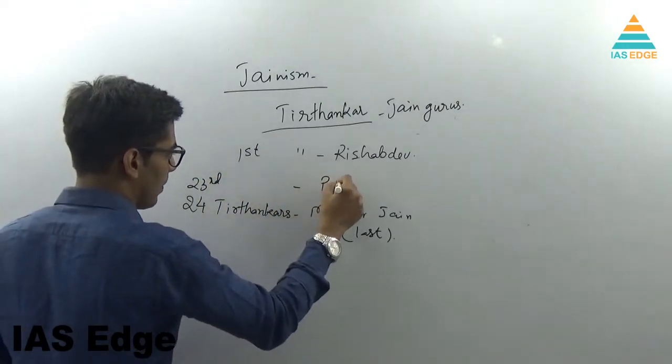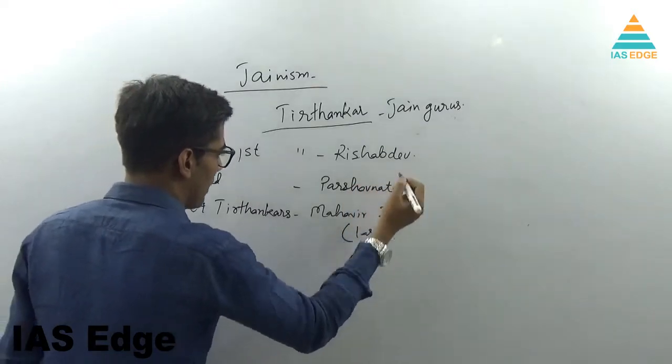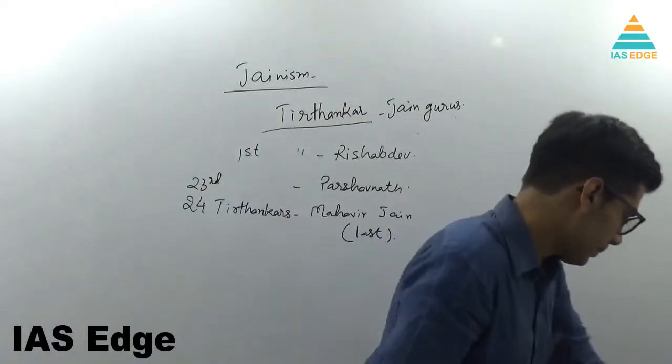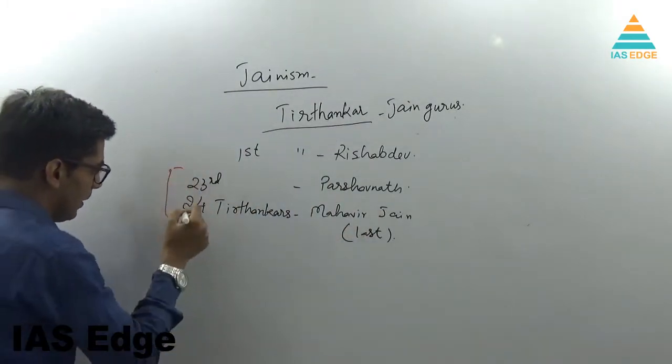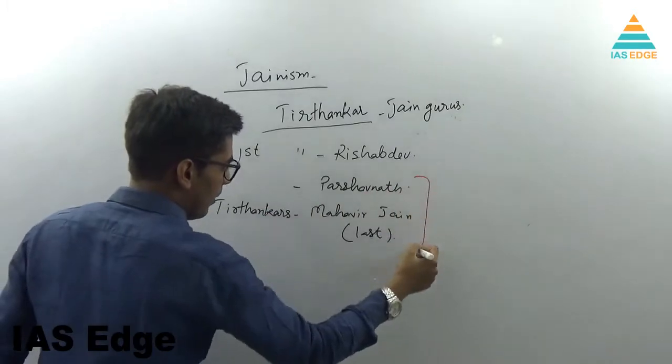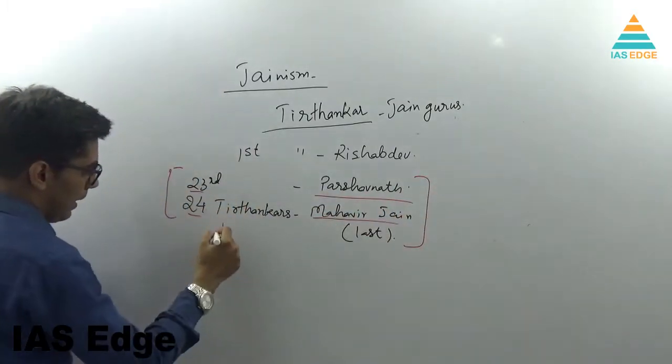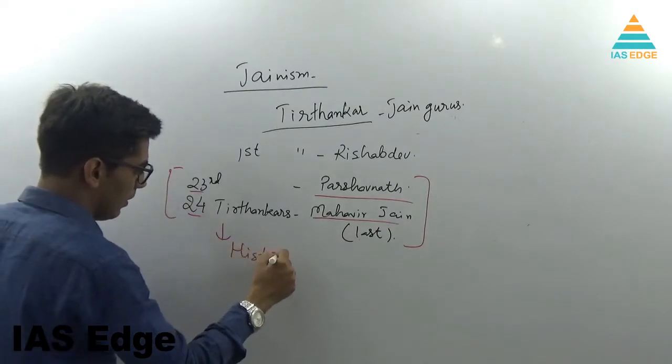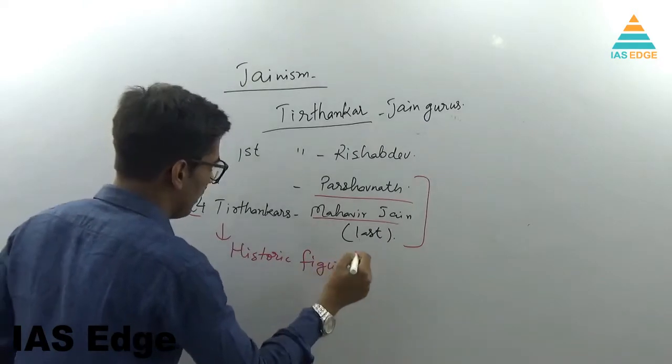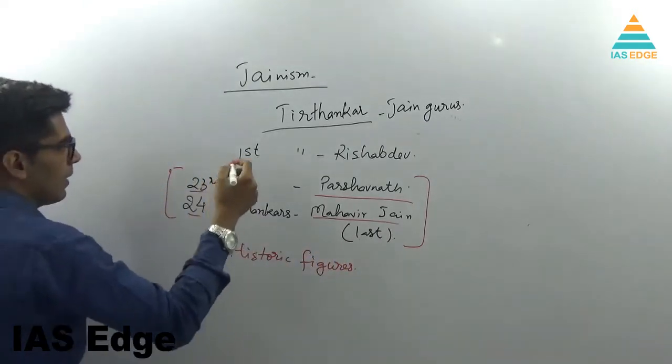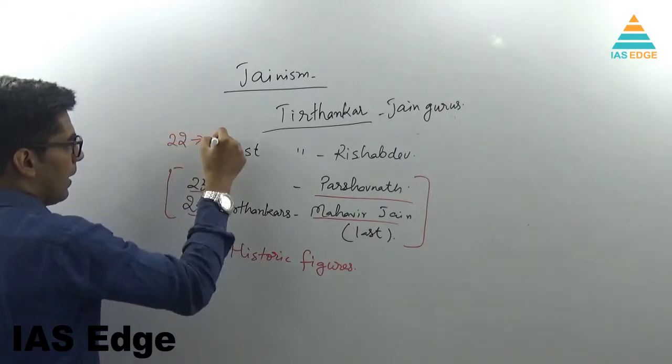The 23rd was Parshvanath. Now we must remember that these two, Parshvanath and Mahavir Jain, the 23rd and 24th, are historic figures, whereas the first 22 are mythological.